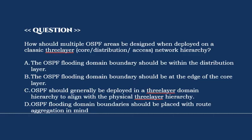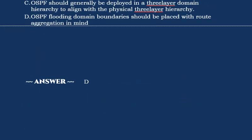Question: How should multiple OSPF areas be designed when deployed on a classic three-layer core-distribution-access network hierarchy? Option A: The OSPF flooding domain boundary should be within the distribution layer. Option B: The OSPF flooding domain boundary should be at the edge of the core layer. Option C: OSPF should generally be deployed in a three-layer domain hierarchy to align with the physical three-layer hierarchy. Option D: OSPF flooding domain boundaries should be placed with route aggregation in mind. Correct answer is Option D.